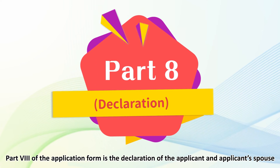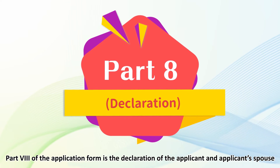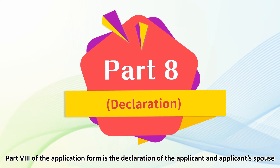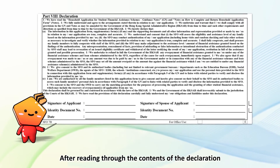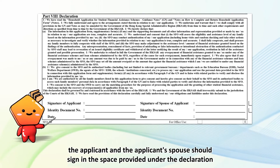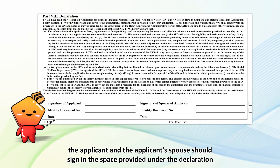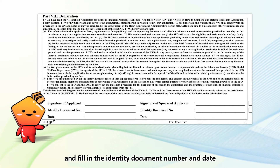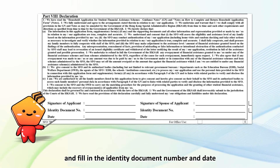Part 8 of the application form is the declaration of the applicant and applicant's spouse. After reading through the contents of the declaration, the applicant and the applicant's spouse should sign in the space provided under the declaration and fill in the identity document number and date.